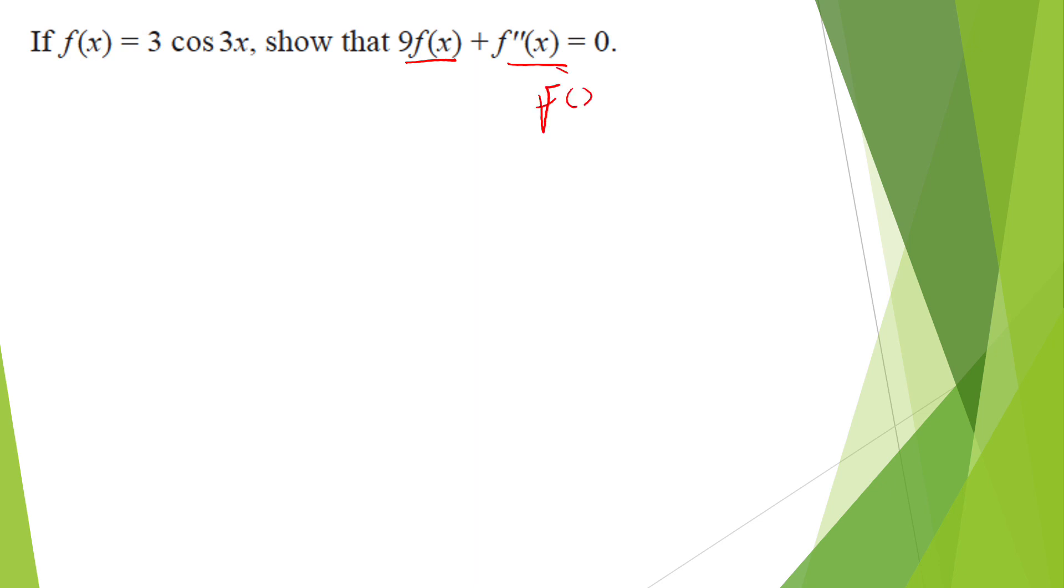I'm going to find f' first, which is 3, and differentiation of cosine is negative sine. So it's negative sine 3x times 3, which gives me negative 9 sine 3x.